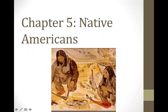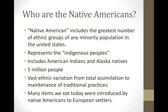Chapter 5: Native Americans. The word 'Native American' includes the greatest number of ethnic groups of any minority in the United States, and currently accounts for about 2% of the population. It includes indigenous peoples — those who were native to the land before it was inhabited by Europeans and other settlers. It includes American Indians and Alaska Natives, totaling about 5 million people.